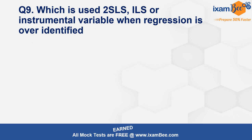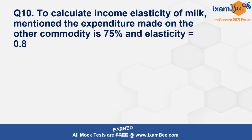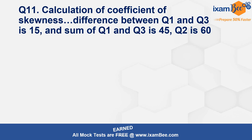The next question asked which method is used when regression is over-identified — this is a simultaneous equation topic, and the answers are two-stage least squares (2SLS) and instrumental variables. Then there was a question on calculating income elasticity of milk: expenditure on another commodity was 75, elasticity was 0.8, and using Engel aggregation the income elasticity of milk comes out to be 1.6.